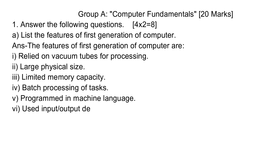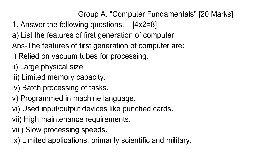Answer the following questions. A. List the features of the first generation of computer. Answer: The features of first generation computers are: 1. Relied on vacuum tubes for processing. 2. Large physical size. 3. Limited memory capacity. 4. Batch processing of tasks. 5. Programmed in machine language. 6. Used input-output devices like punched cards. 7. High maintenance requirements. 8. Slow processing speeds. 9. Limited applications, primarily scientific and military.